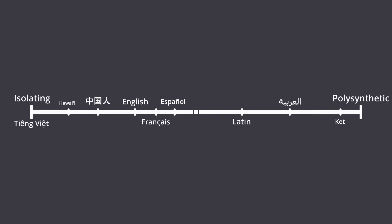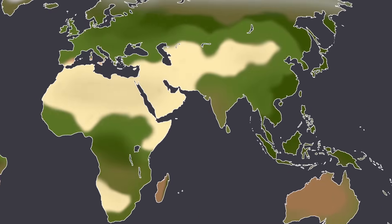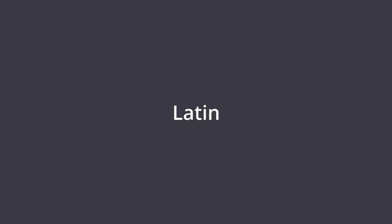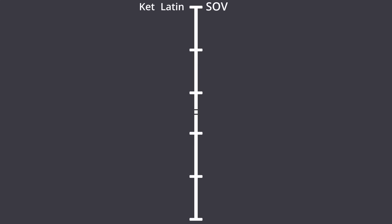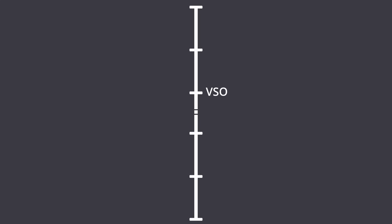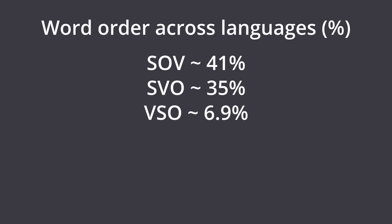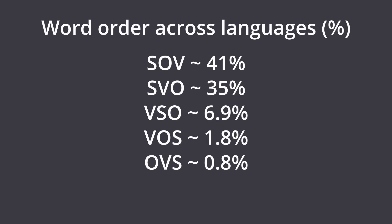But let's come back to that subject-verb-object sentence structure that is special about English. Let's look at other languages all over the world and their sentence structure. We've got a language like Latin, and again Ket, at SOV. Then we've got SVO — that's English, that's pretty normal to us. VSO, you've got Hawaiian. The farther we go down, the rarer it is, so you're going to see less and less languages with these sentence structures.